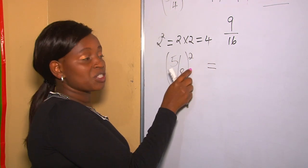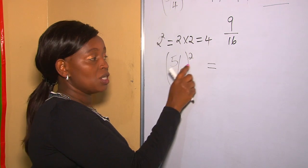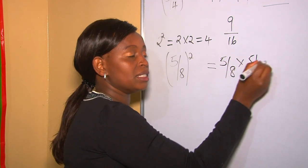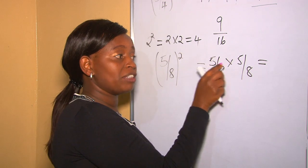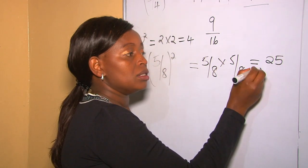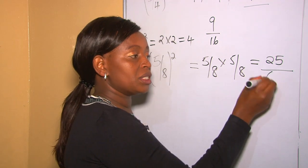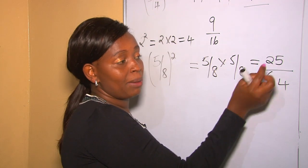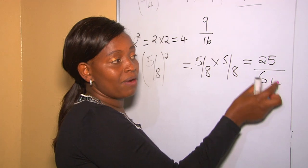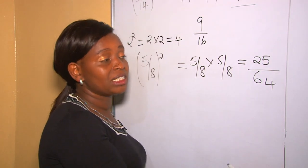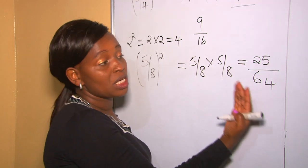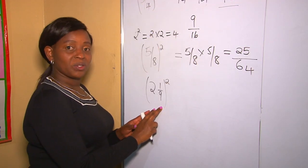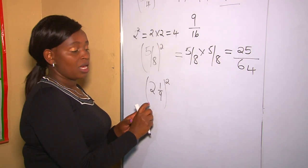Remember, to square a number is to multiply the number by itself. So we multiply our fraction by itself: five over eight multiplied by five over eight. We start by multiplying our numerators — five times five is 25 — divided by eight times eight, which is 64. Our answer 25 is an odd number and 64 is an even number; they don't have a common divisor, so we leave our answer as 25 over 64.